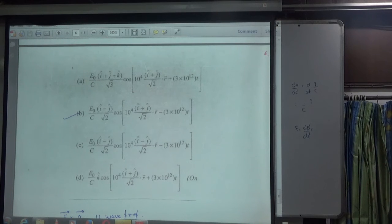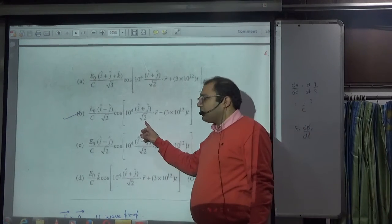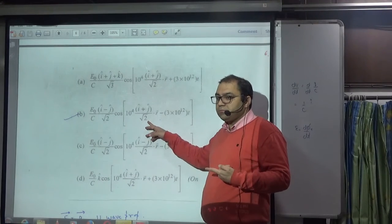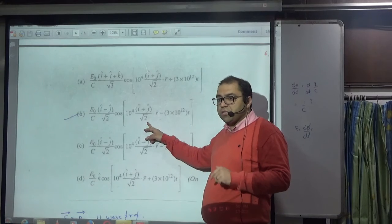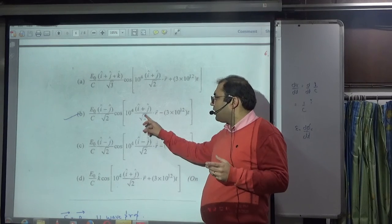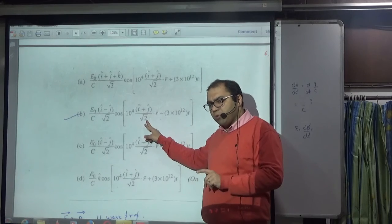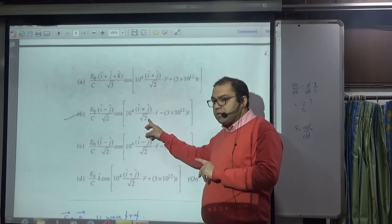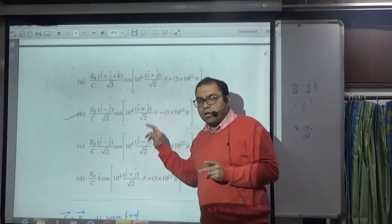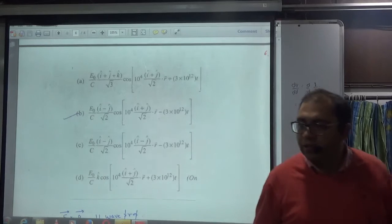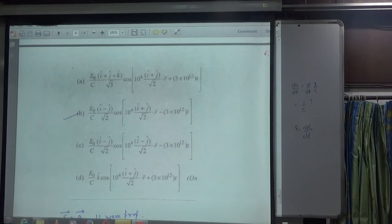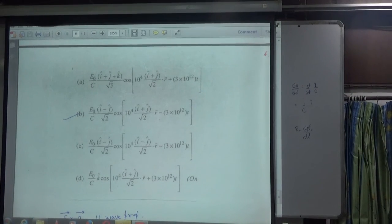The answer is b-option: (i-cap − j-cap) / √2. You can also verify c-option: if c-option then wave propagation becomes (i-cap + j-cap) / √2, and you check if this matches the given direction. Hit-and-trial applies to all options — check E cross B for each and match it. These types of questions appear repeatedly in exams, so you must revise this method once more.